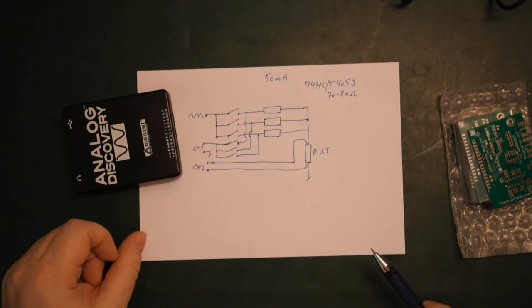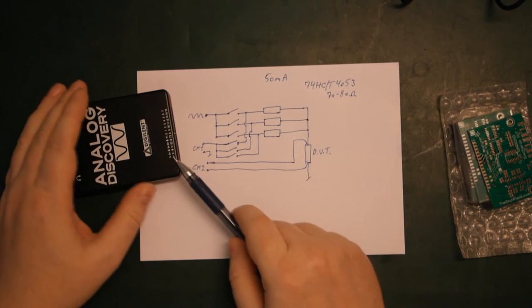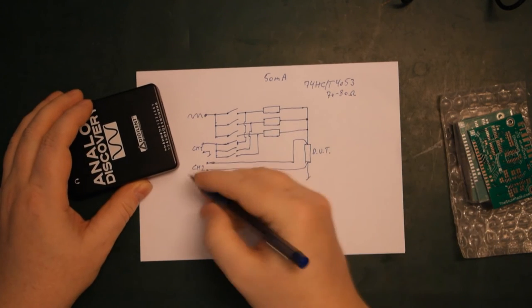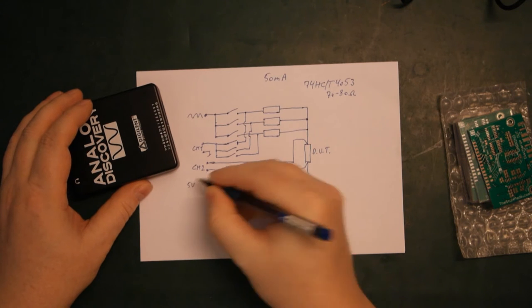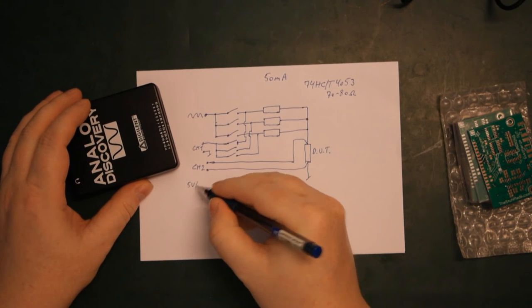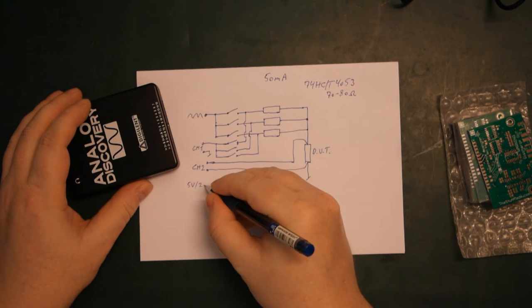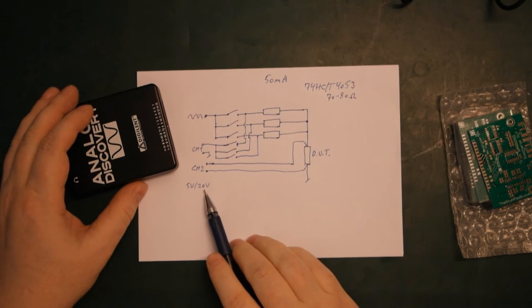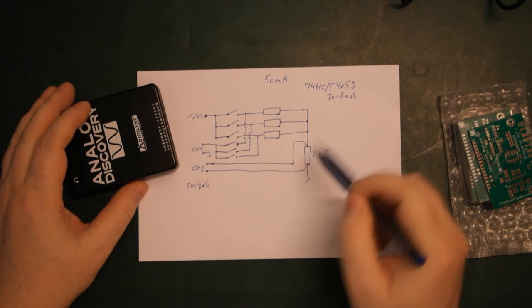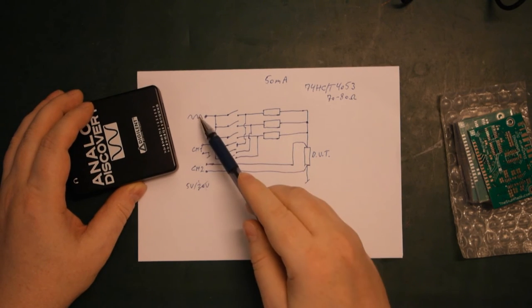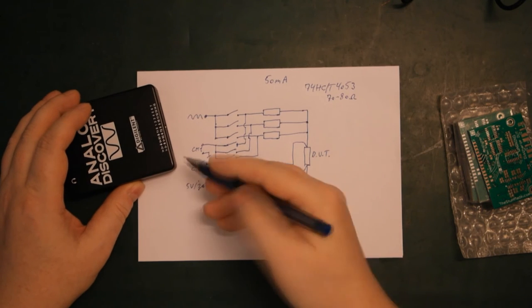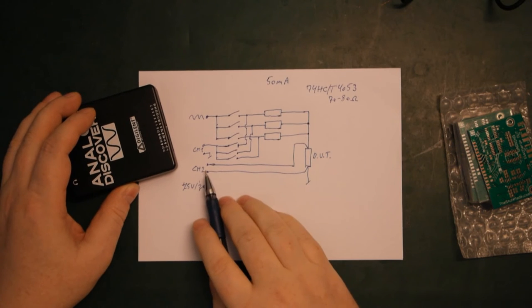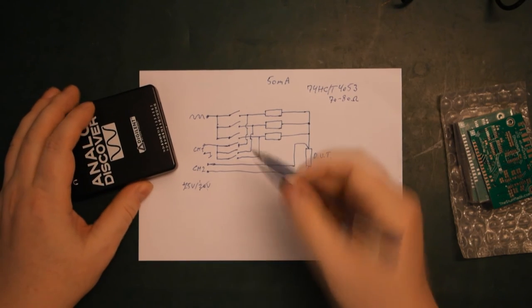And another thing is the input ranges on our scope here. So we only have two ranges. The lower range is definitely 5 volts. And I believe the higher range is 20 volts. So we will never need the high range in this project here, because we have maximum plus minus 5 volts inputs here, plus minus 20 volts.